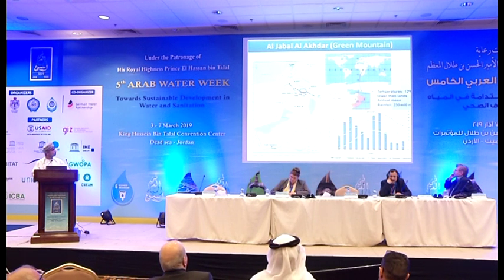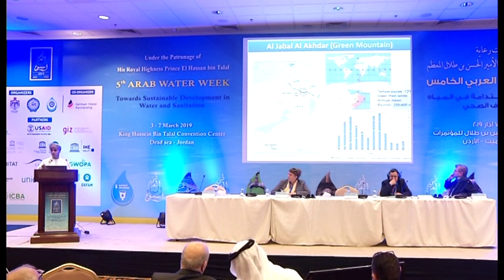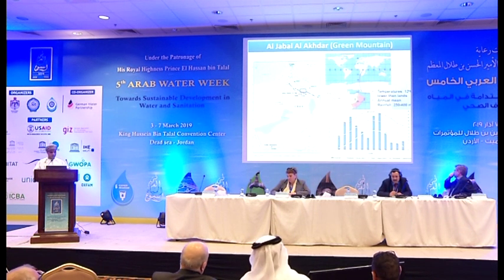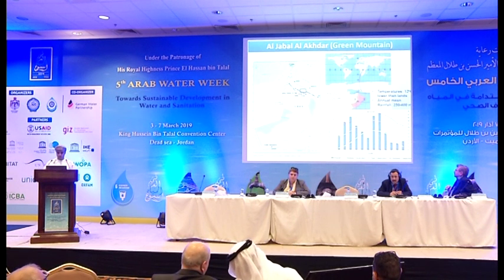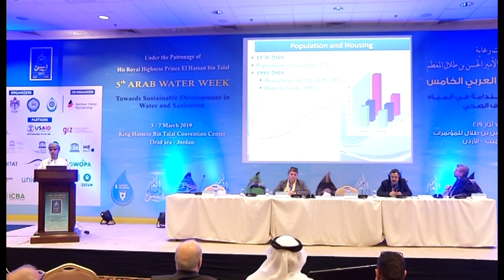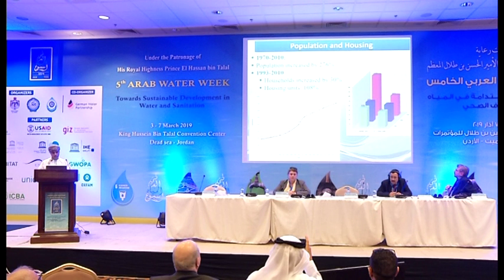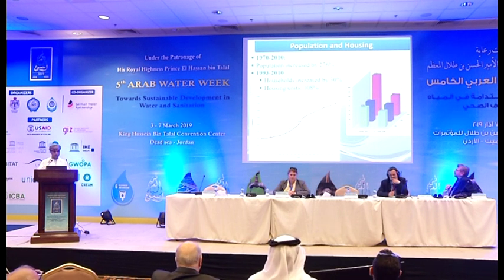Oman's mountains cover around 20 percent of the total area. Looking at the temperature in this region, temperatures are 12 degrees centigrade lower than the lowland. Rainfall is around 250 to 400 millimeters annually, and that is significantly higher than in the surrounding lowlands of Oman, which receive no more than 50 to 75 millimeters annually. There have also been rapid social developments in these mountains, especially regarding population — which increased by more than 200 percent since the 1970s — and housing units, which also increased by more than 100 percent since the last census in 2010.